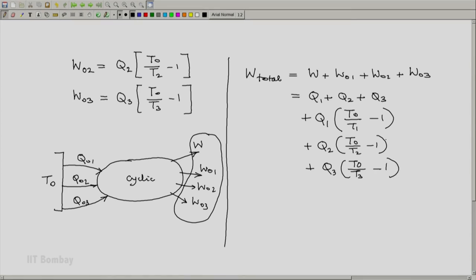You will notice that Q1 cancels with this Q1, Q2 cancels with this Q2, and Q3 cancels with this Q3. You end up with T0 times (Q1/T1 plus Q2/T2 plus Q3/T3), which we have assumed to be greater than zero.